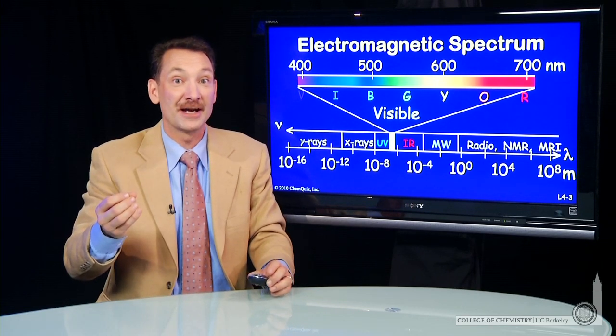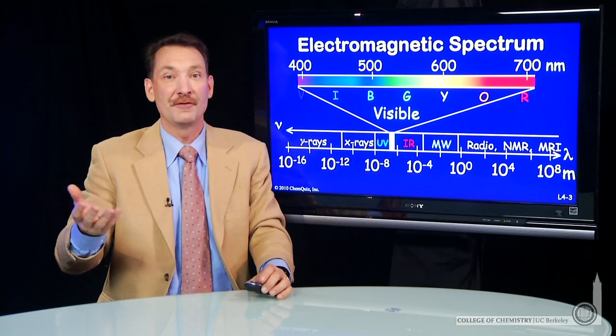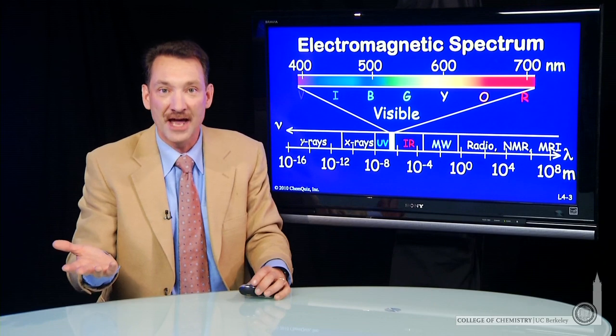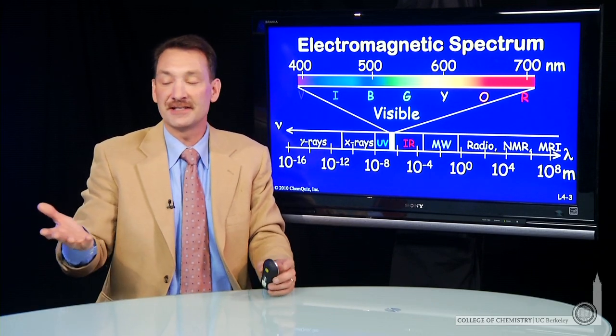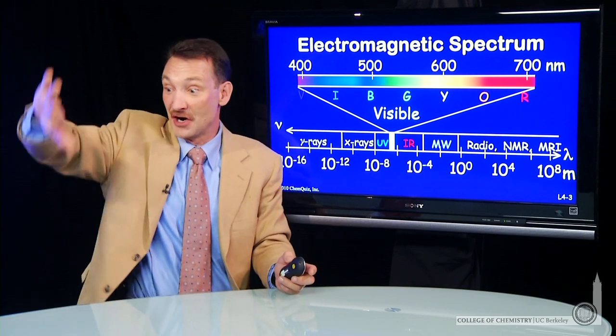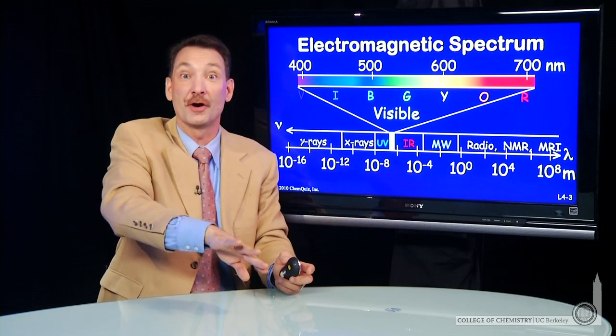Now, there's more properties to electromagnetic radiation and waves in general. For instance, the intensity. We haven't touched on that yet. You can think of the intensity of waves in the ocean as their height as they come into the shore.